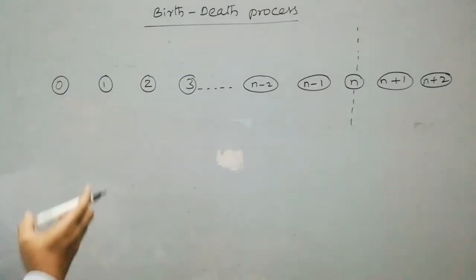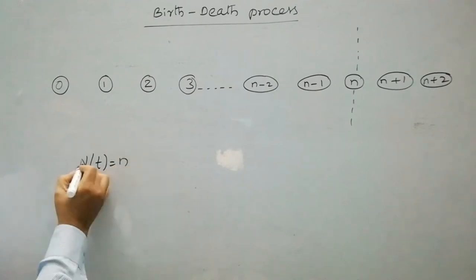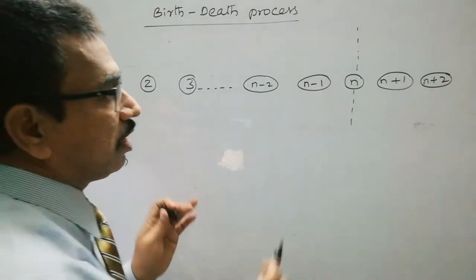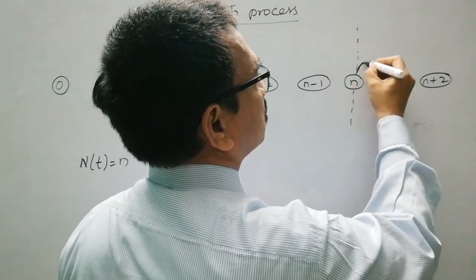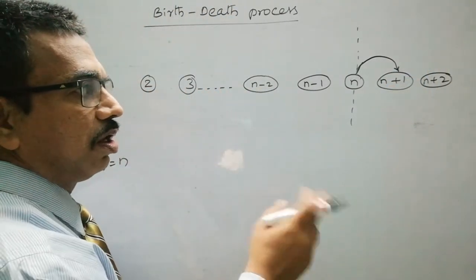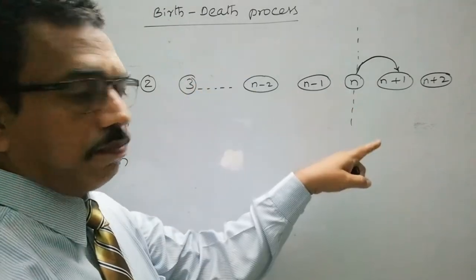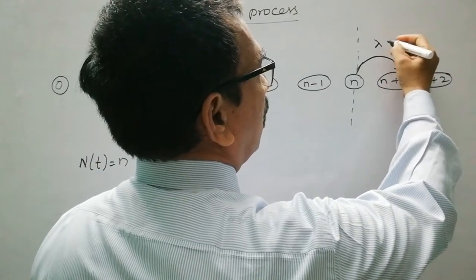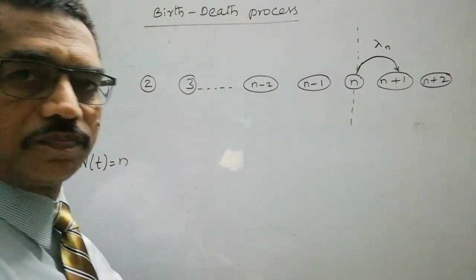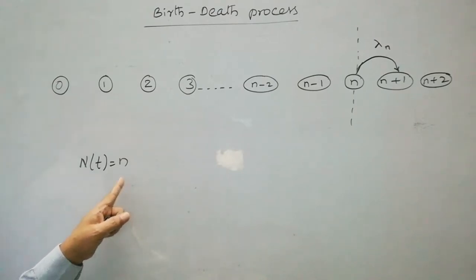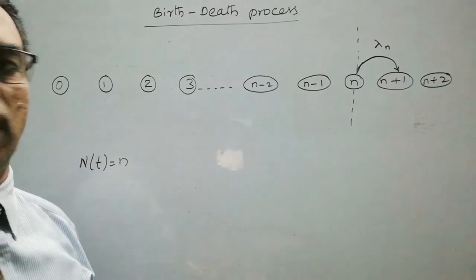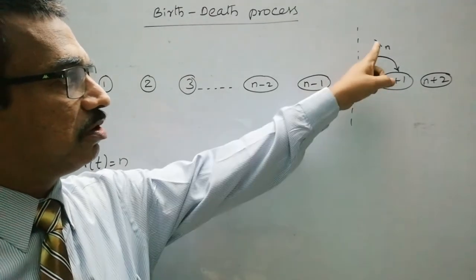According to Assumption 1, given that N(t) = n, the current probability distribution of the remaining time until the next arrival or birth takes place — that is, the state changes from n to n+1 — follows exponential distribution with parameter lambda_n. So given N(t) = n, the remaining time until the next birth or arrival follows exponential distribution with parameter lambda_n.